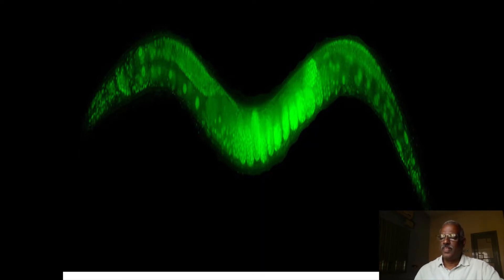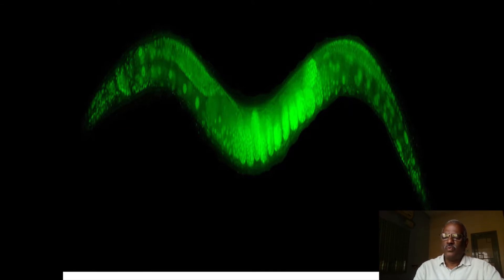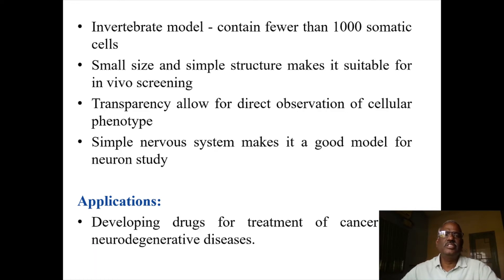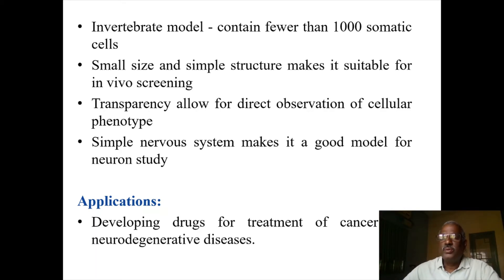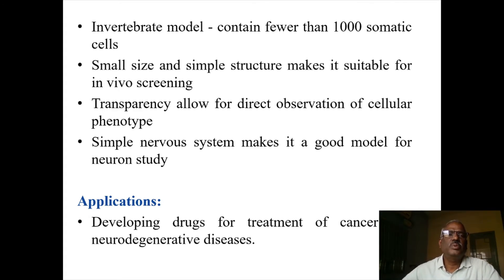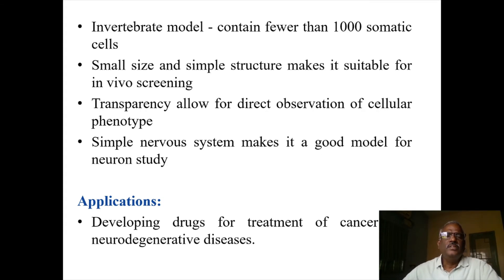What are the advantages of C. elegans? It is an invertebrate model which contains fewer than 1000 somatic cells. Out of those 1000 somatic cells, 300 will be neurons. It is therefore highly suitable for studies related to neurons. It is also very small in size.